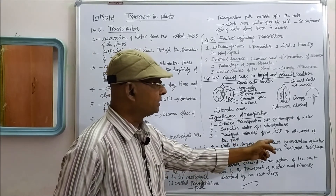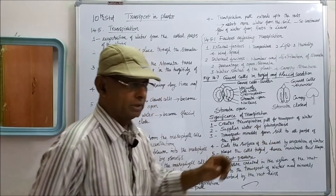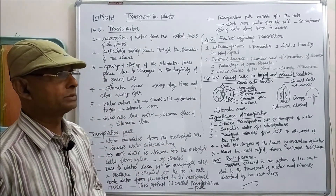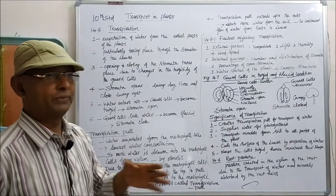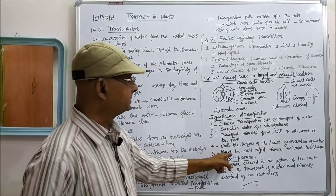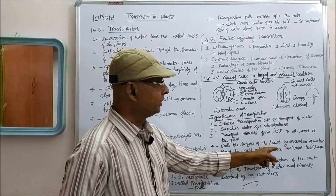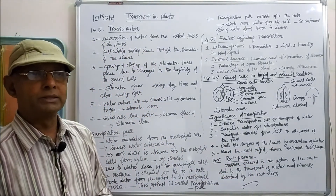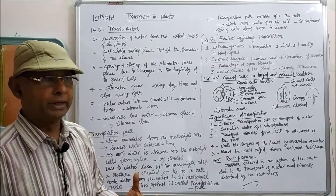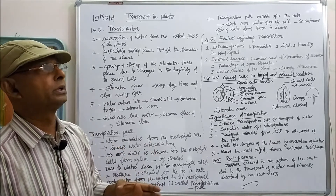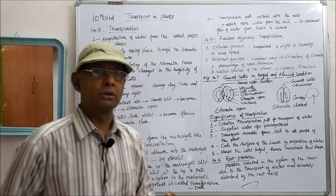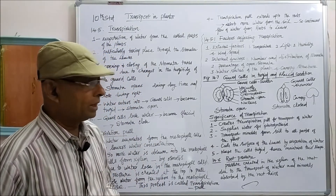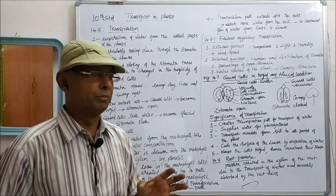Fourth, transpiration cools the surface of the leaves by evaporation of water. Due to evaporation of water, a cooling effect takes place on the surface of the plant and the leaves. Fifth, transpiration keeps the cells turgid, hence maintains cell shape. Due to continuous water supply, cell turgidity is maintained so that continuous physiological processes take place and cell shape is maintained.